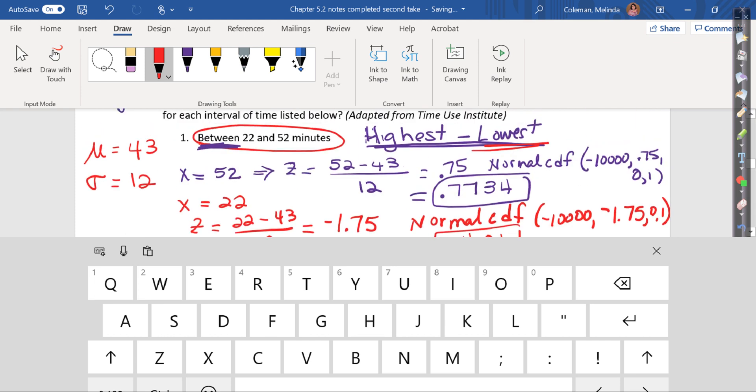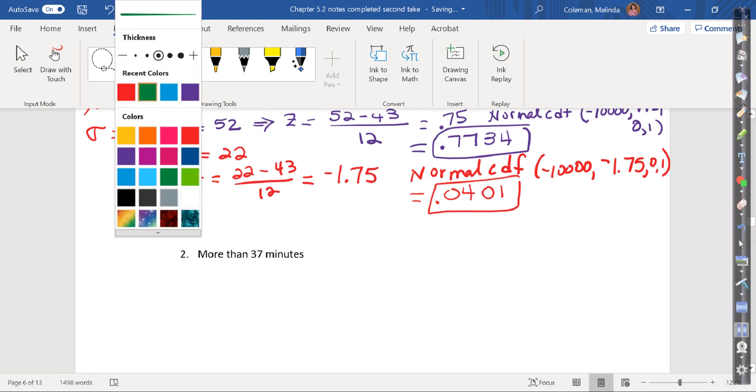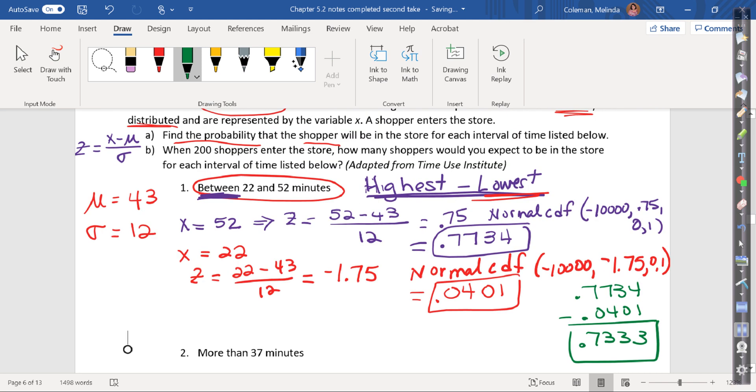To get the between, I need to subtract these two. So I'm going to subtract, and I will have 0.7734 minus 0.0401, which equals 0.7333. So if I were to interpret this, this was the A part.